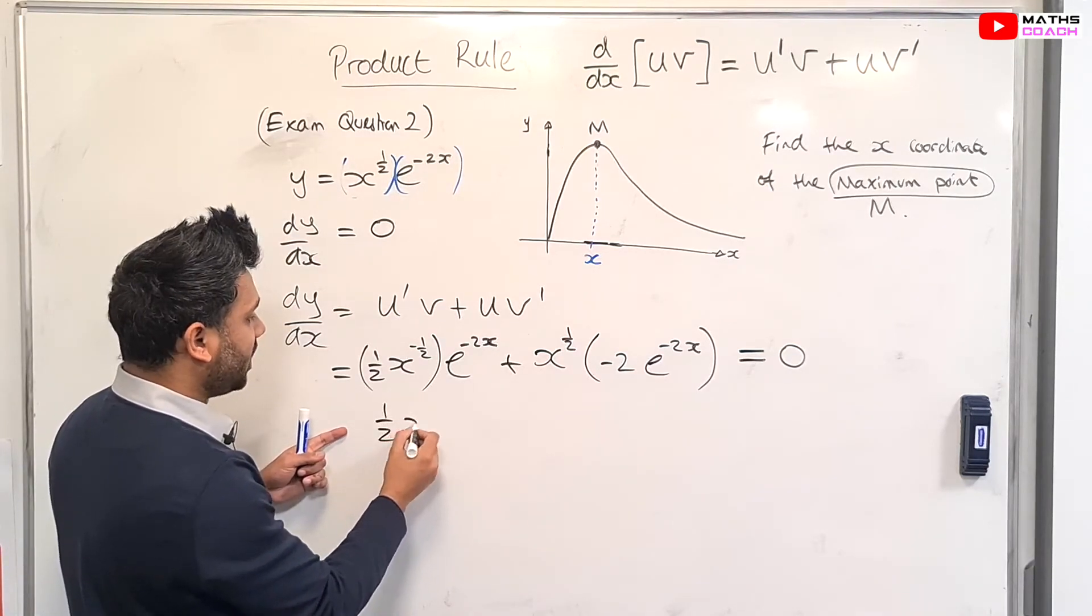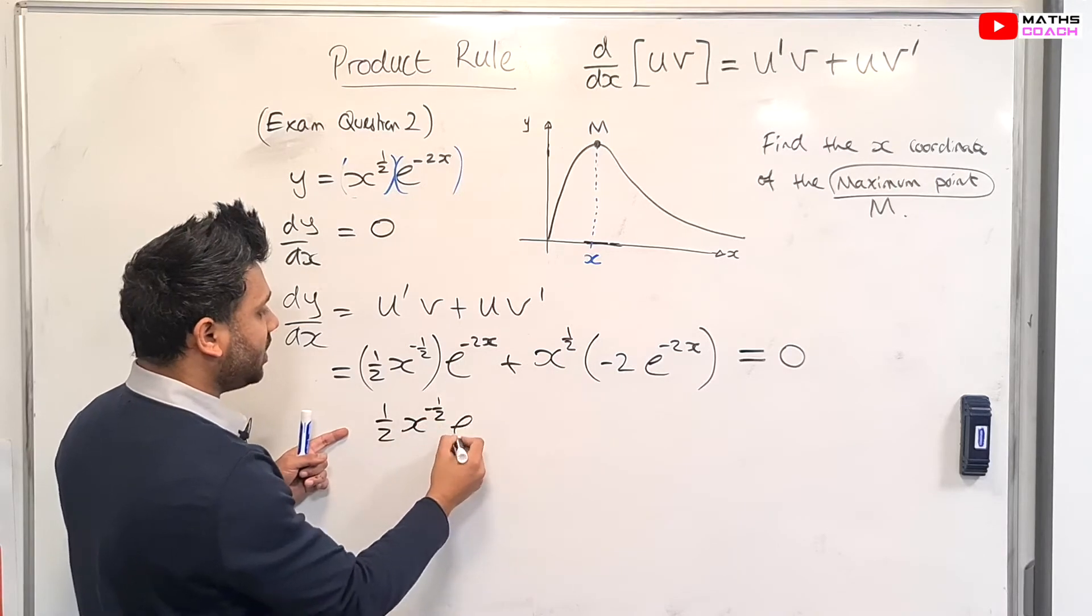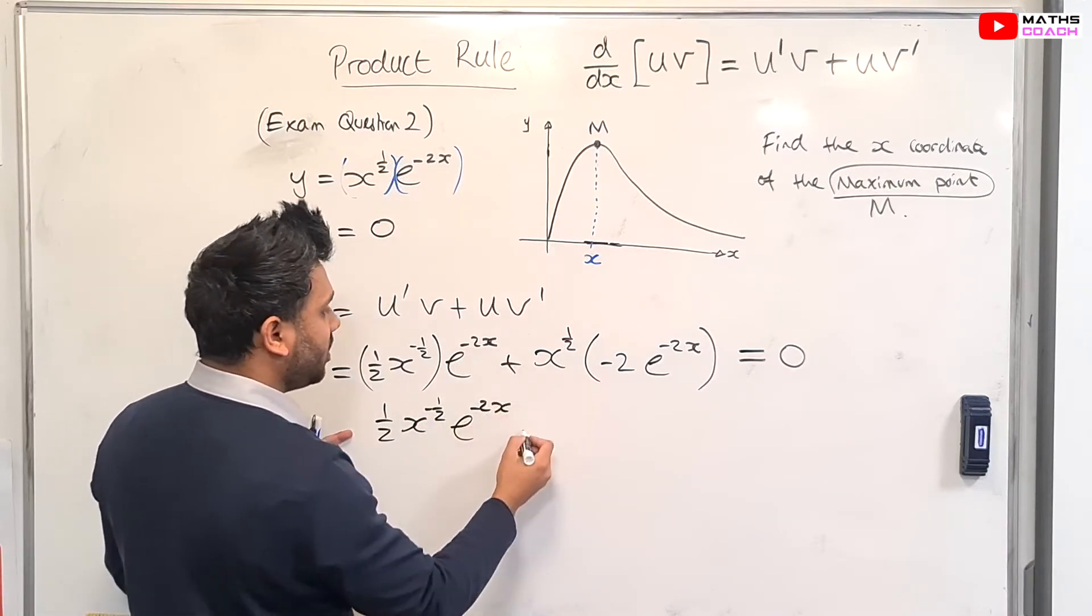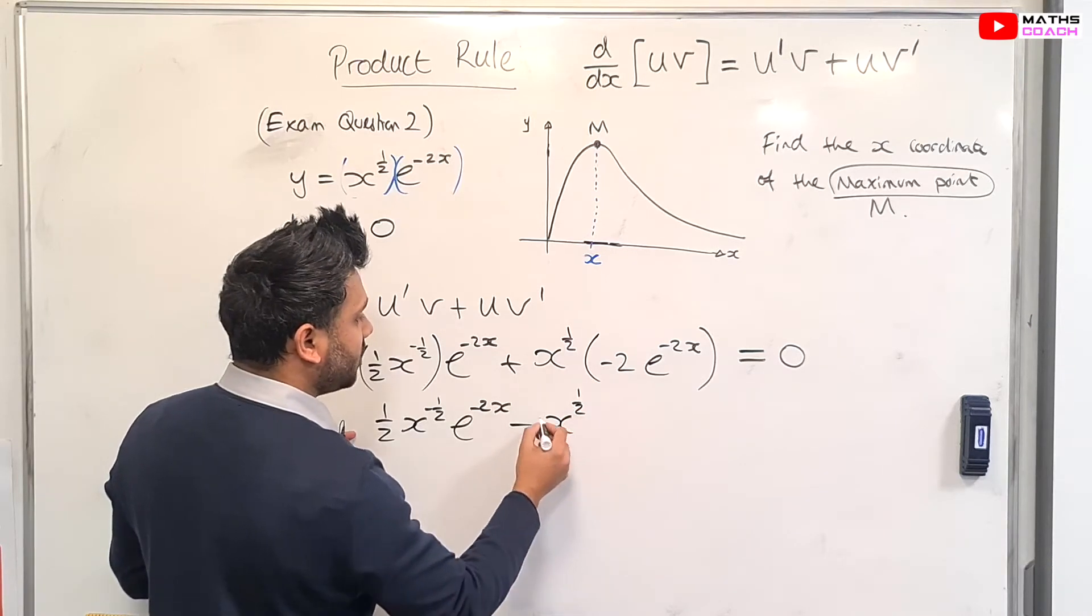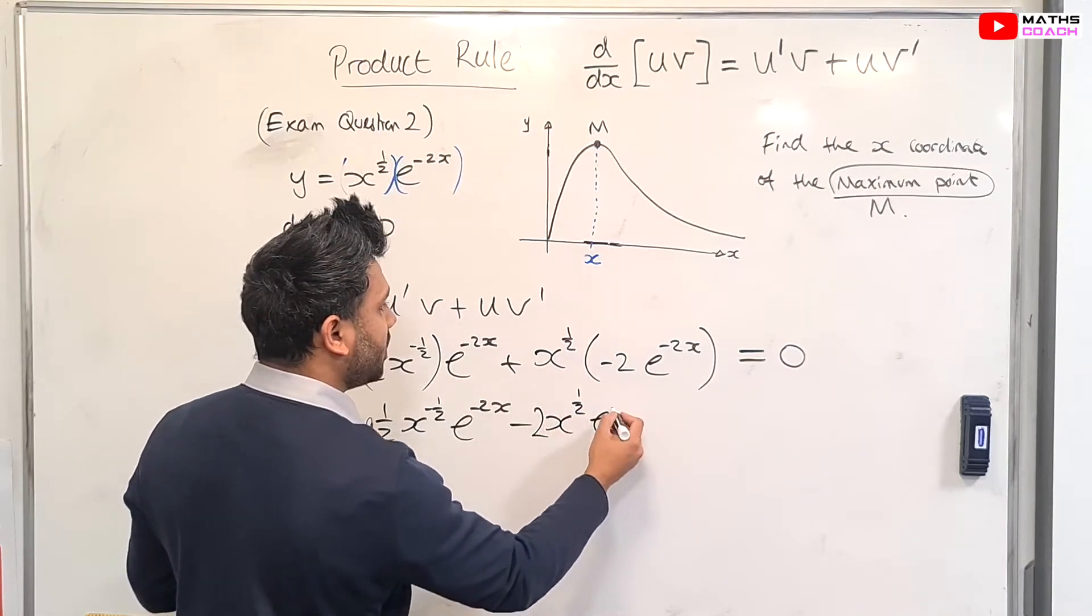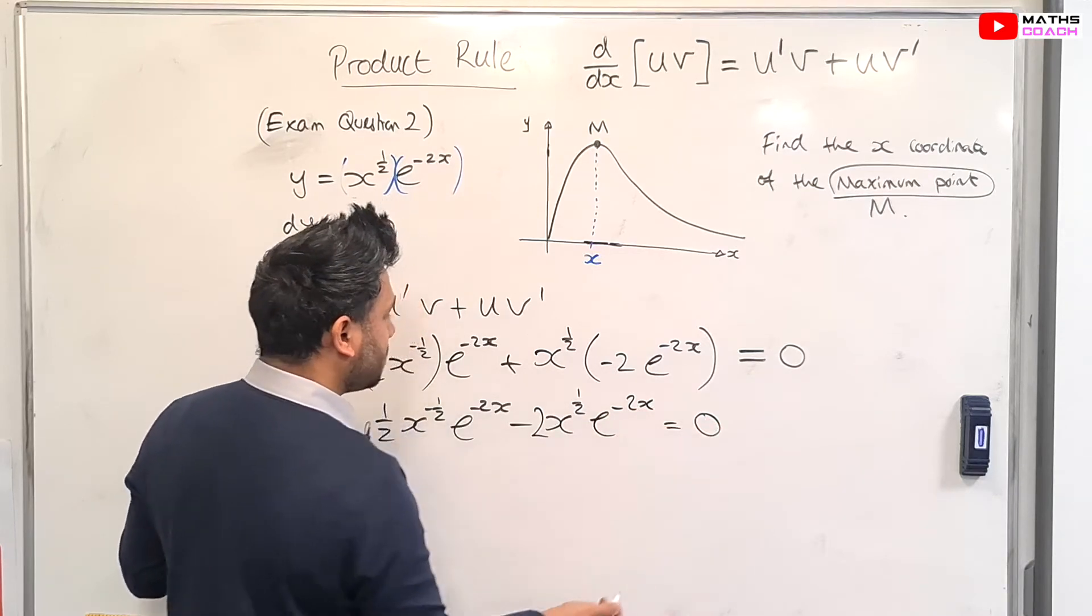We have a half x to the minus a half e to the minus 2x minus 2x to the power of a half e to the minus 2x is equal to zero.